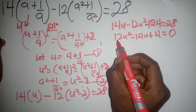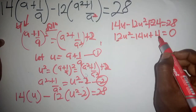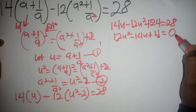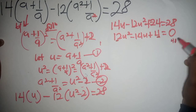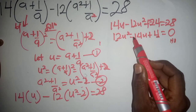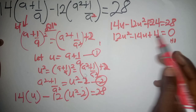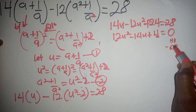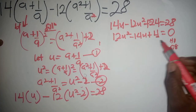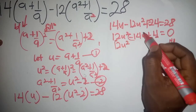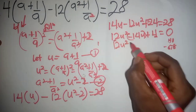To solve the quadratic, we multiply the coefficient of u², which is 12, by c = 4, giving us 48. We look for two numbers that multiply to 48 and add to -14. Those numbers are -6 and -8, since (-6)×(-8) = 48 and (-6)+(-8) = -14.